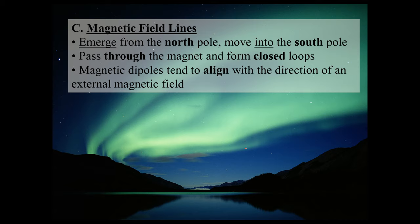Third point: magnetic dipoles tend to align with the direction of an external magnetic field. Part of the mini lab involved sprinkling iron filings around a bar magnet and seeing what happened. Those little tiny iron filings are all magnetic dipoles — really tiny magnets with a north pole and a south pole — and they tend to line up with the direction of the magnetic field produced by your permanent magnet.